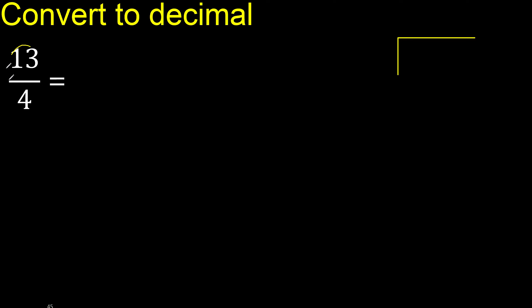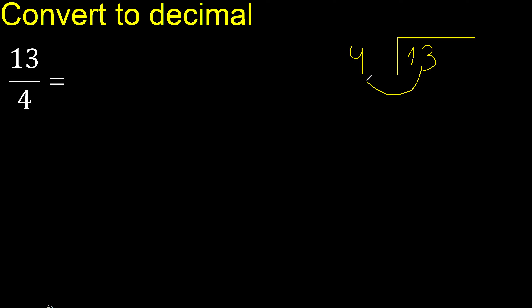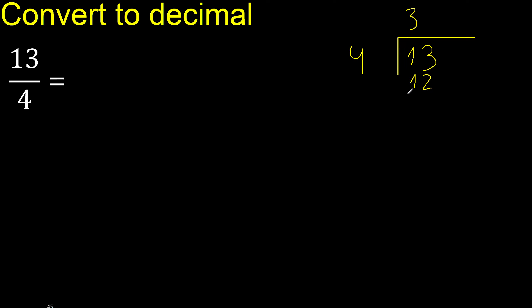13 divided by 4. 13 is not less, therefore 4 multiplied by which number is nearest to 13 but not greater. 4 multiplied by 4 is 16, which is greater. 4 multiplied by 3 is 12, which is not greater. Subtract: remainder is 1.